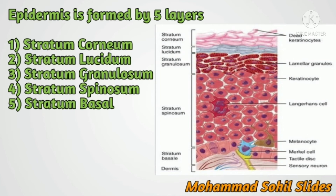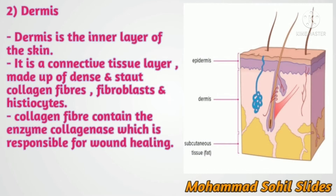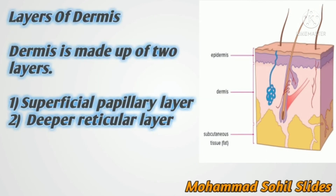After epidermis, the second layer is dermis. Dermis is the inner layer of the skin — a connective tissue layer made up of dense collagen fibers, fibroblasts, and histiocytes. Collagen fibers contain the enzyme collagenase, which is responsible for wound healing. Dermis is made up of two layers: the superficial papillary layer and the deeper reticular layer.